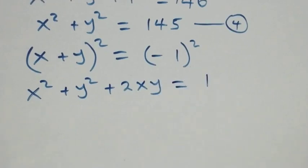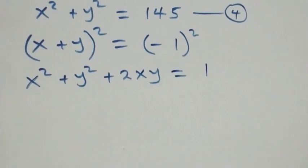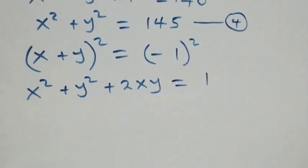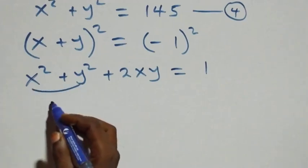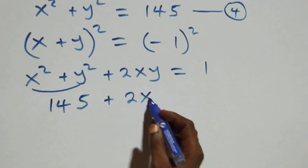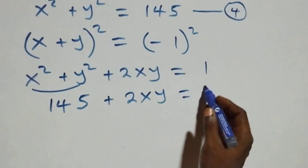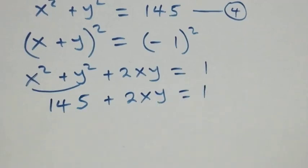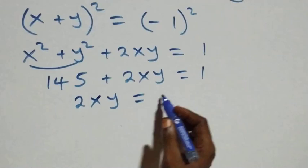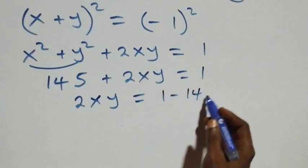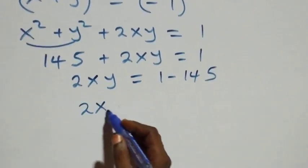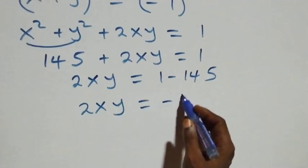From equation four we have x² + y² = 145, so we substitute: 145 + 2xy = 1. Taking 145 to the other side, 2xy = 1 - 145, which gives 2xy = -144. Let's call this equation five.